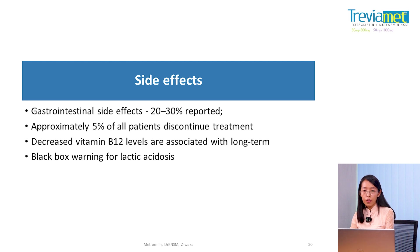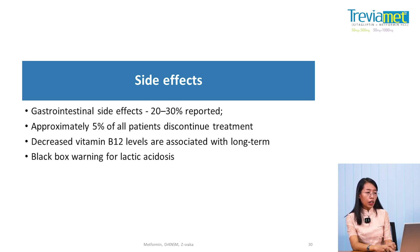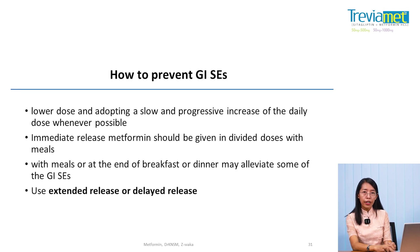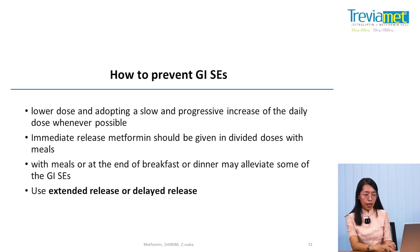The most common side effect affects 20 to 30% of patients. Every patient should be monitored, and in some cases the drug must be totally discontinued. There is a black box warning for lactic acidosis. The solution is to start at lower doses, with slow and progressive dose increases. The immediate release form is divided into two doses per day. The extended release or delayed release formulation reduces GI side effects.